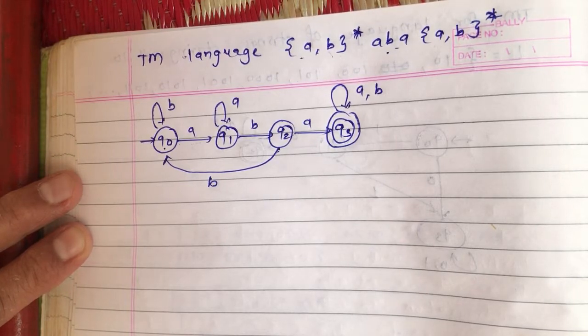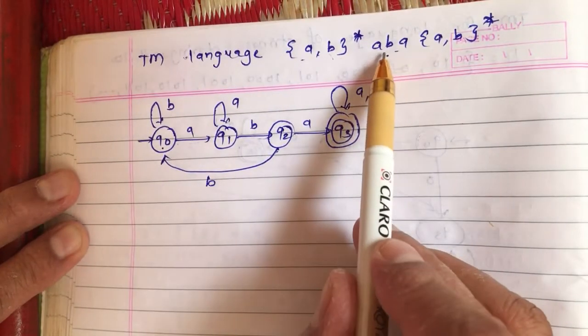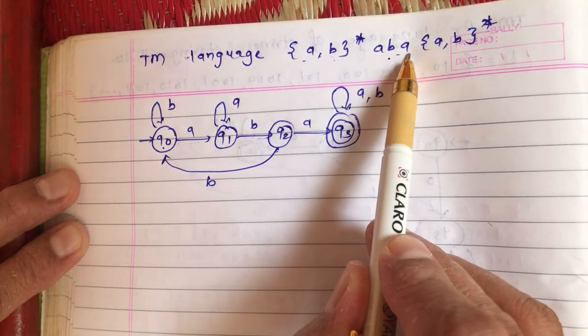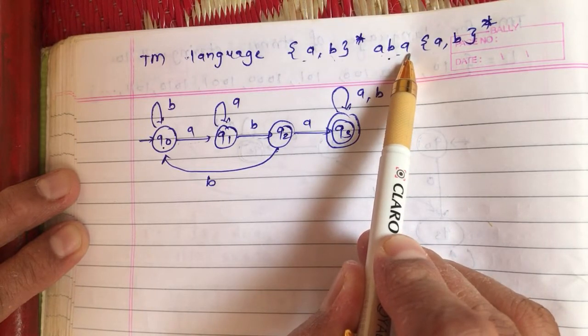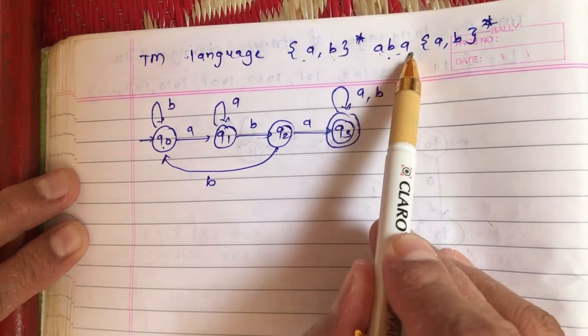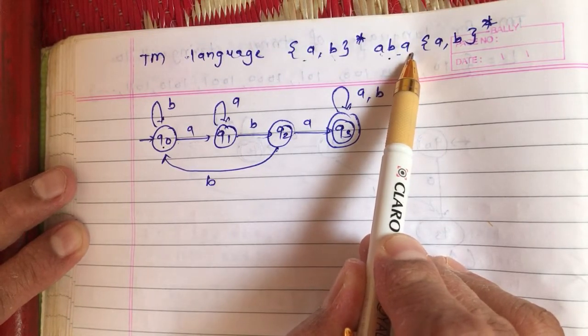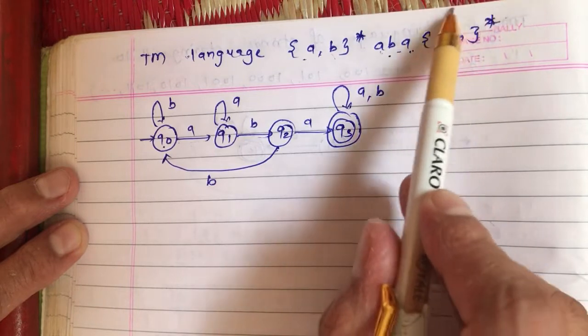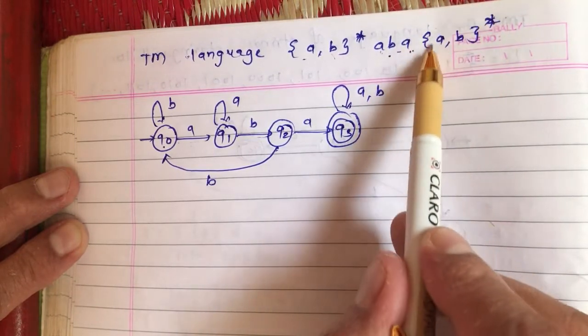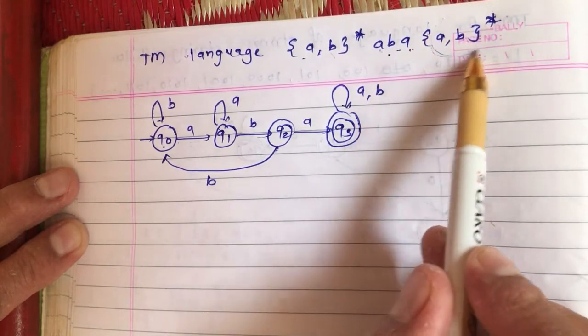What we understand is the moment I find aba, I can tell that my string is getting accepted. Until I'm not finding aba in my string, I cannot comment that the string is getting accepted or rejected.